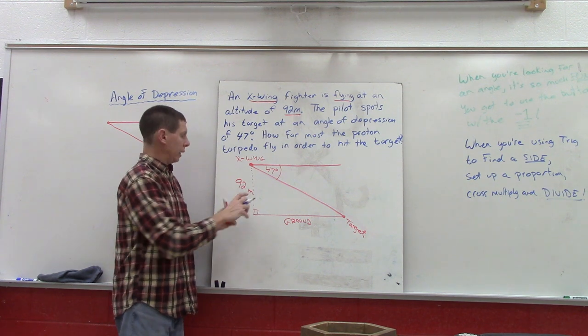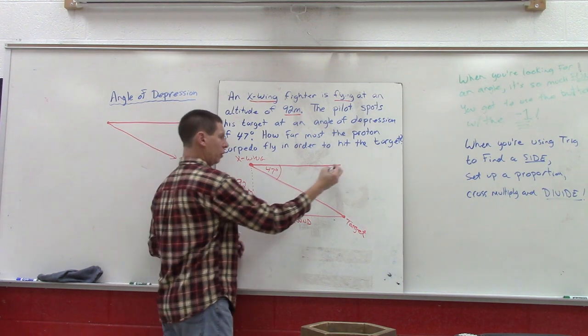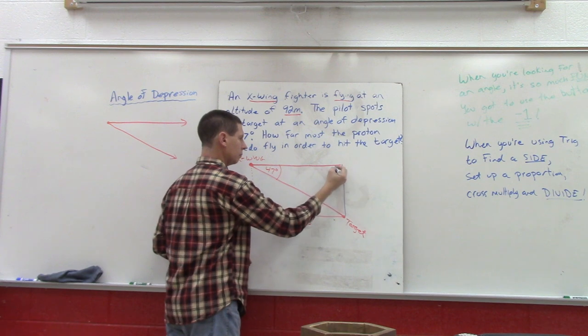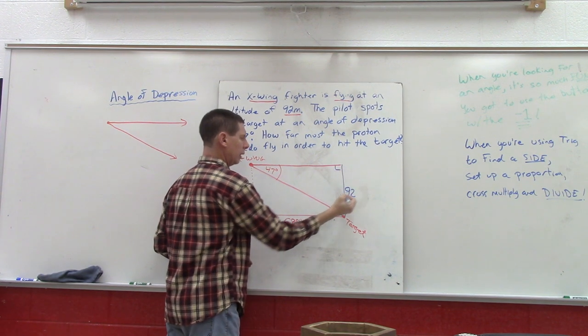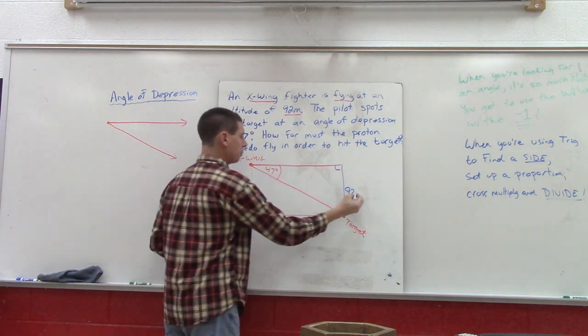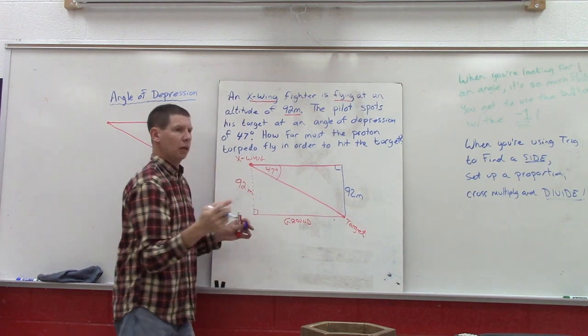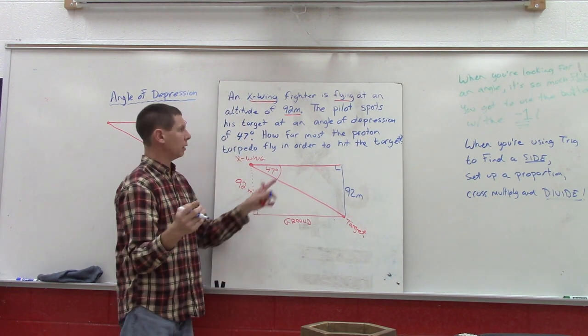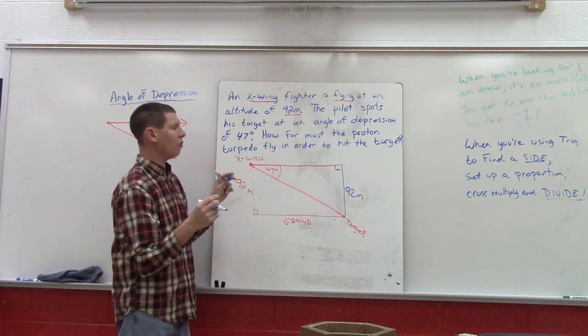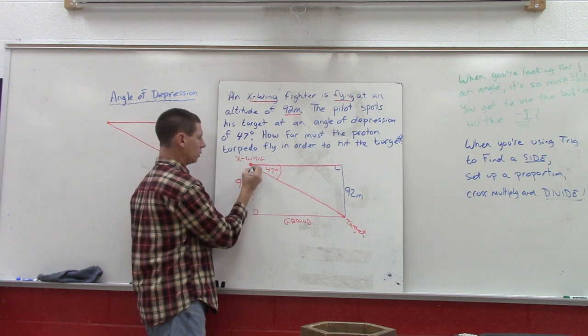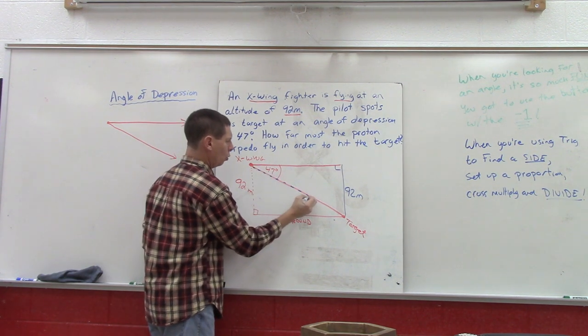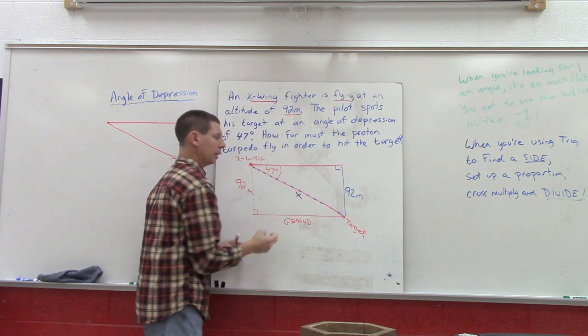So what we can do is transfer this 92 over—and I should say meters not degrees—and now we have our right triangle to help us answer the question. How far must the torpedo fly? So in other words, if that torpedo goes pew, we're looking at this.